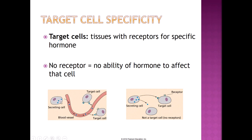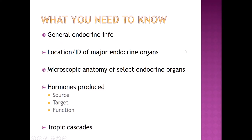For instance, here you can see our little secretory cell, our little endocrine cell, and the hormone traveling through the blood. These cells have a receptor that can bind — lock and key — to the hormone, so the hormone can affect these target cells. However, this other cell doesn't have that receptor for that hormone, so the hormone will not be able to affect it. That's why some hormones affect only a specific tissue or maybe a couple of different tissues. That target cell specificity is incredibly vital.